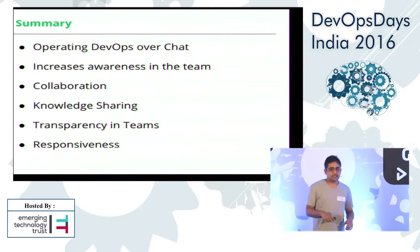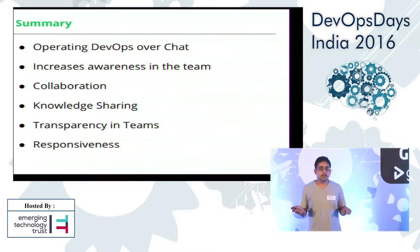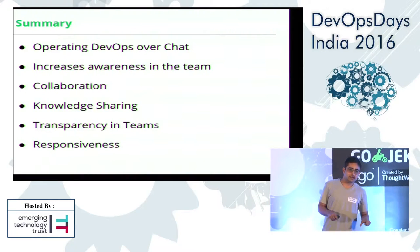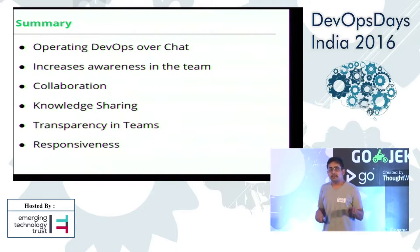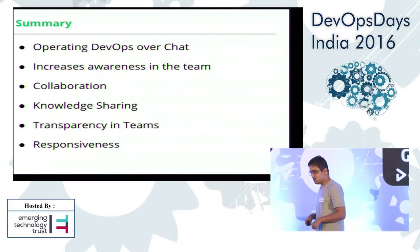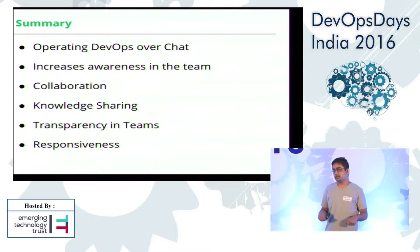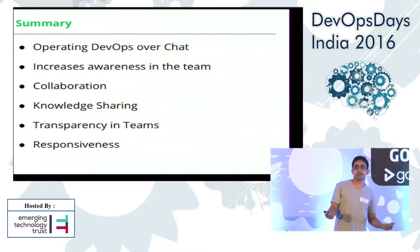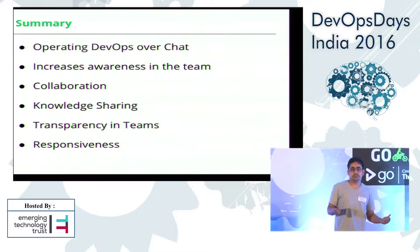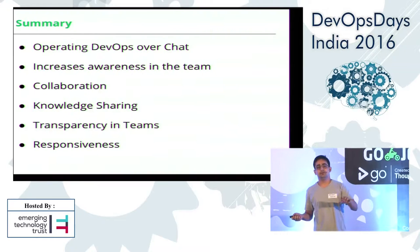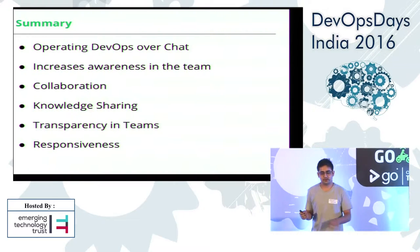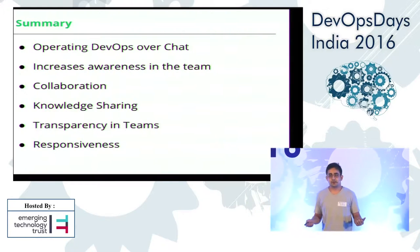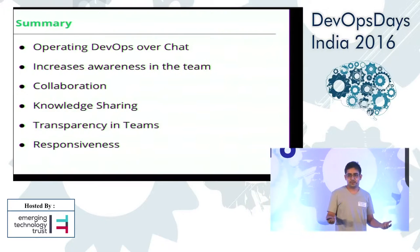As a summary, what is ChatOps? Operating DevOps over a chat. That is ChatOps — it increases awareness in the team, increases collaboration, people will collaborate more among each other. Knowledge sharing is the most important part. People will share like, 'yeah, this is not wrong.' The transparency and responsiveness will increase in the team, and hence productivity will increase and you will get a good hike.